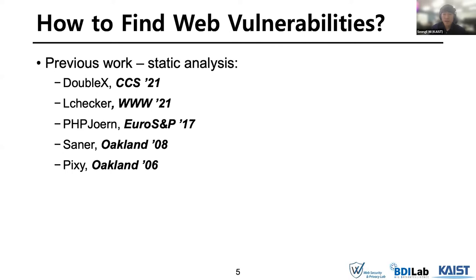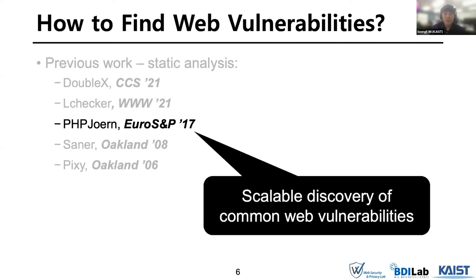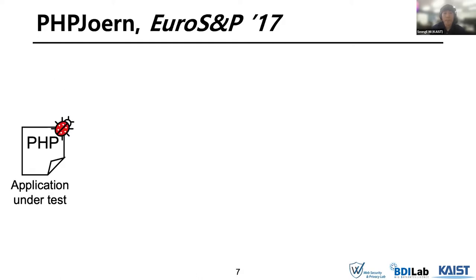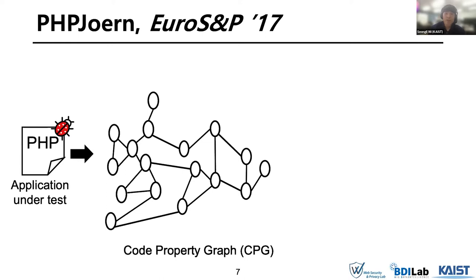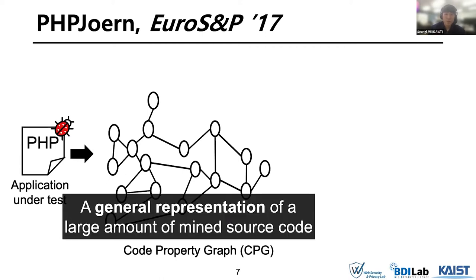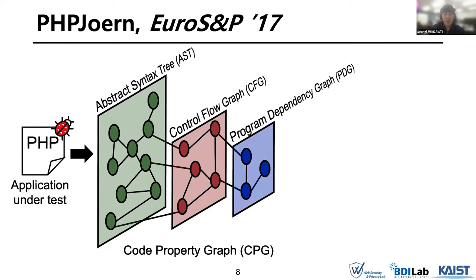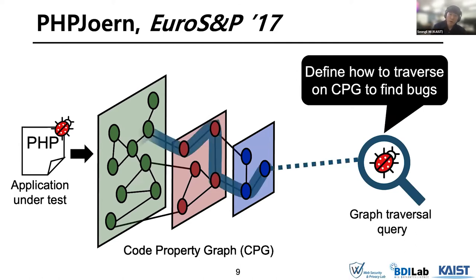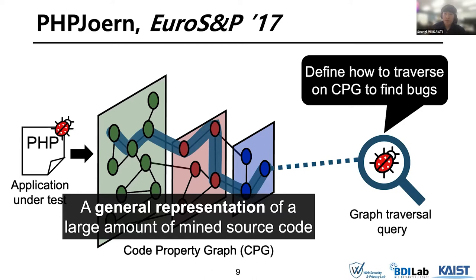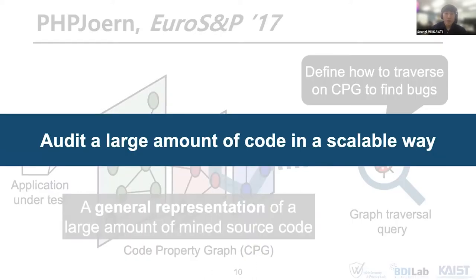There have been previous studies on finding various web vulnerabilities via static analysis. Among them, PHP has received a lot of attention by presenting a scalable way for detection of common web vulnerabilities. This work proposes a code property graph, known as CPG, which is a general representation of mined source code. CPG merges graphs of program analysis — namely abstract syntax tree (AST), control flow graph (CFG), and program dependence graph (PDG) — into a joint structure. This work leverages a graph traversal query that defines how to traverse on CPG to find bugs, allowing us to test a large amount of code in a scalable way.